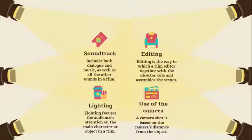B: Use of the camera — a camera shot is based on the camera's distance from the object. The four basic shots used in films are: a close-up, a very close shot where the camera lens focuses on some detail or the actor's face.